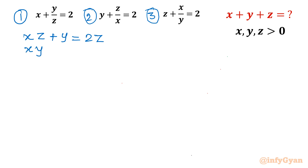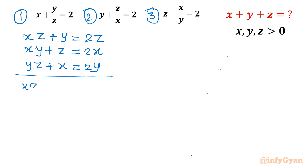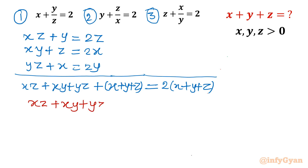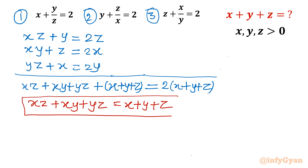Taking LCM straight away: xz + y = 2z. Equation number 2: xy + z = 2x. Similarly, the third one: yz + x = 2y. Now I will add all three. So I can write: xz + xy + yz + x + y + z = 2(x + y + z). Now I will take away (x + y + z) from both sides, so I get: xy + yz + zx = x + y + z.